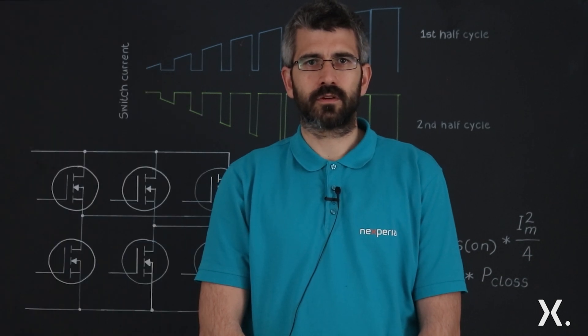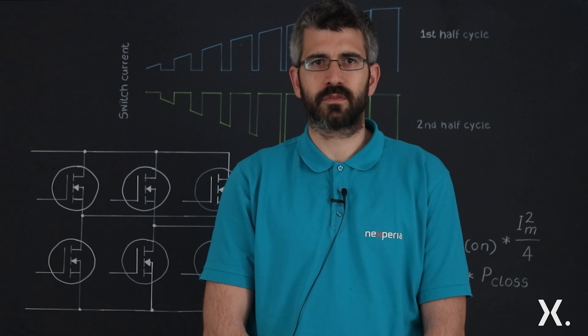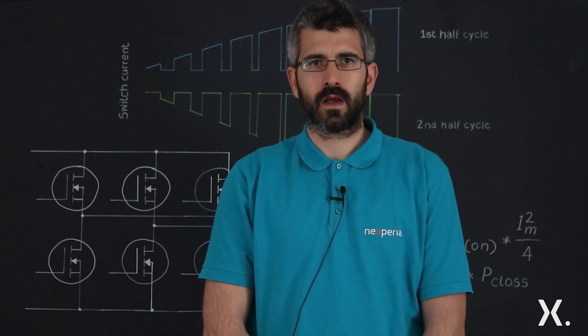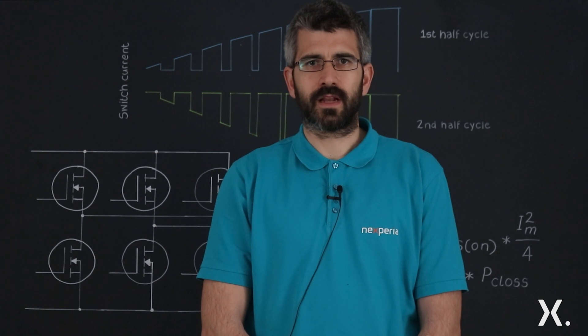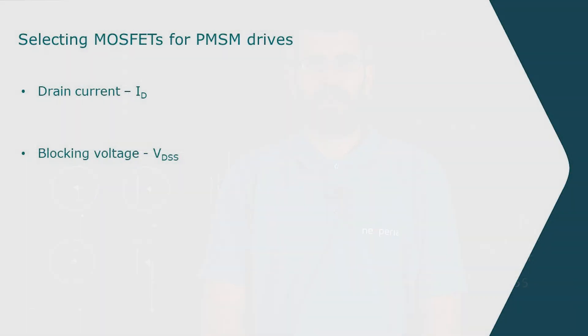The current and voltage rating of the device is important and can be deducted from calculating the maximal phase current and the battery voltage. A margin is added to these values to obtain MOSFETs ID and VDS ratings.